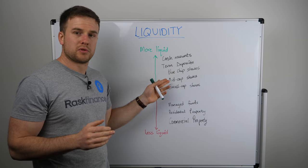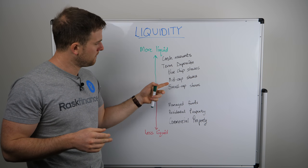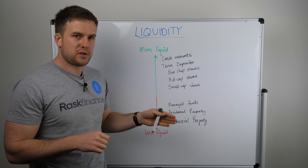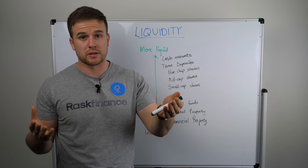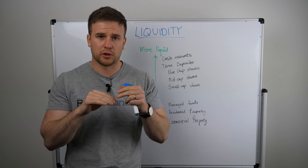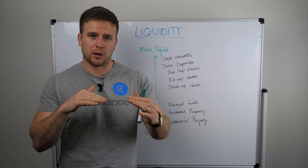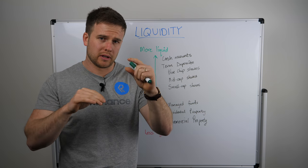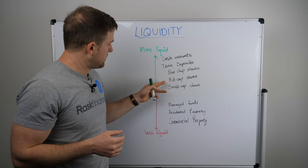Further down we have shares. In the share market we might have blue chip shares, mid cap shares, or small cap shares. Blue chip shares are at the top of the list because they are most liquid — they have many buyers and sellers. So at any one time you could go into a share brokerage account and buy and sell blue chip shares. You may not get the exact market price but you will get very close to it because there are so many buyers and sellers.